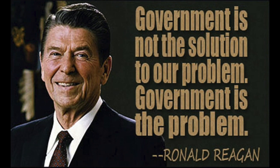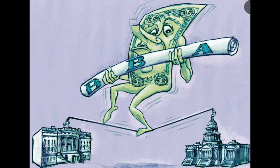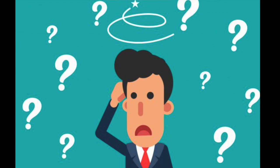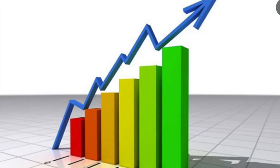As Reagan said in his first inaugural address as president, "Government is not the solution to our problem. Government is the problem." This led Reagan to cut government spending in what were deemed unnecessary programs, such as welfare, to shrink the government and balance the budget.